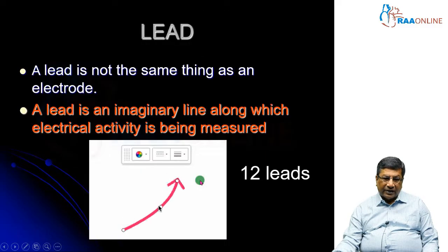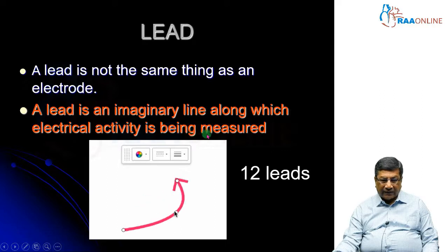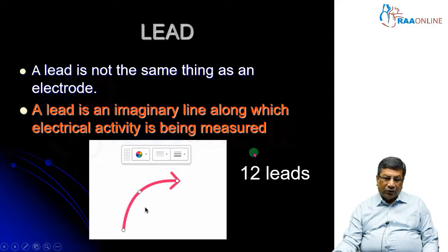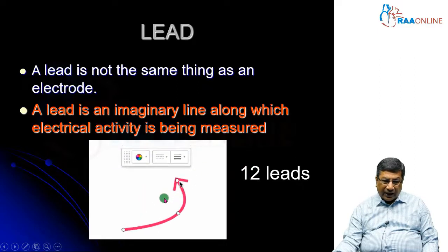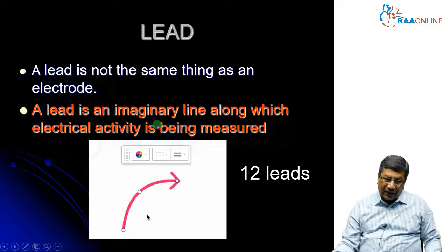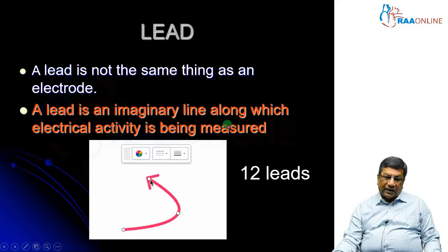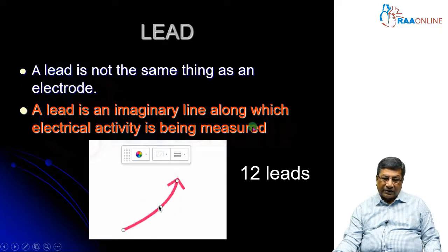The lead, on the other hand, is not a physical object. Lead is an imagined line through which I am going to measure the electrical activity of the heart. We have 12 leads. For each of the 12 leads, you must know along what imagined line you are measuring the electrical activity. For example, when looking at L1, through that imagined line I am seeing the electrical activity; for L2, through a different imagined line I am seeing the electrical activity of the heart.